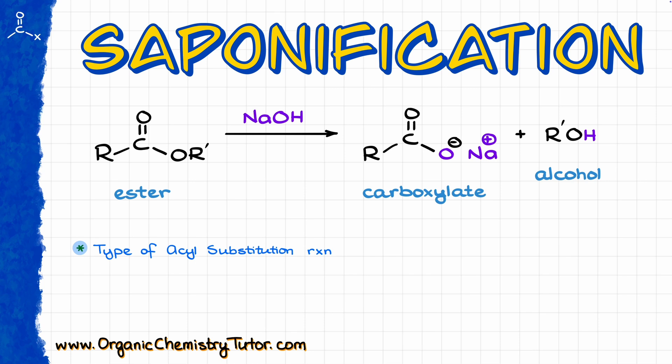In the saponification reaction, we are going to take an ester, which is a derivative of a carboxylic acid, and we are going to react it with a base, typically sodium or potassium hydroxide. And as a result, we are going to get a corresponding carboxylate, which is a salt of the carboxylic acid, and the alcohol left over.